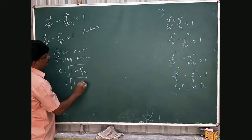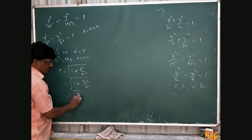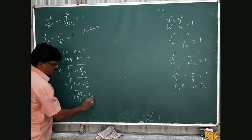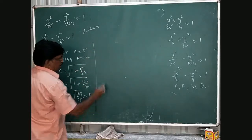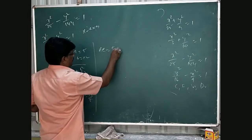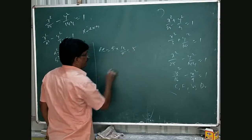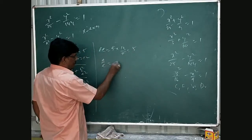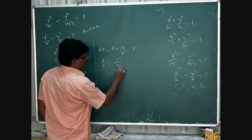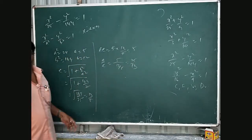So 1 plus 144 by 25, that means root of 169 by 25, that is equal to 13 by 5. Then ae, ae is what, ae equal to 5, e equals 13 by 5, cancel cancel 5. Then a by e, ae is what, 5, this is 13 by 5, that is equal to 25 by 13. So, this is a general thing.